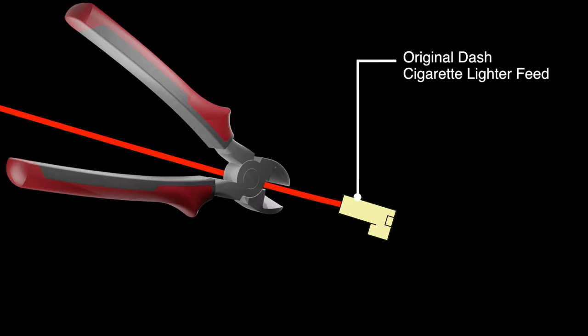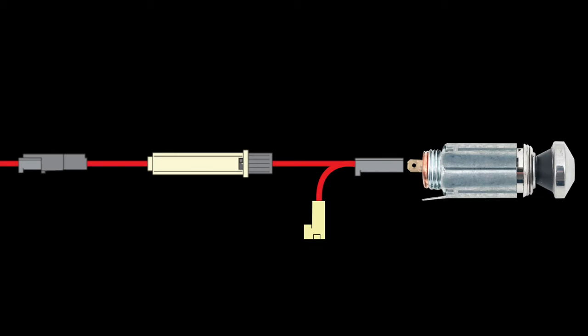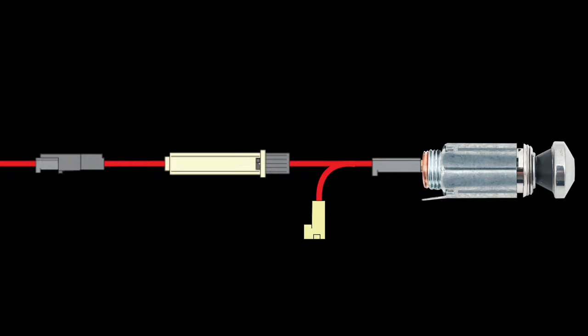To install, simply cut the lighter feed wire just behind the original connector. Strip and crimp on the supplied female terminal and install the connector. At this point, the new pigtail can be installed on your lighter and the second pigtail can be taped out of the way.